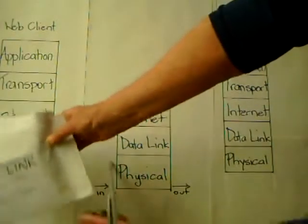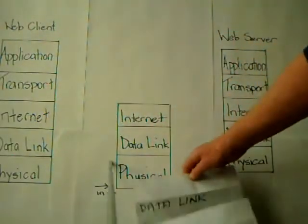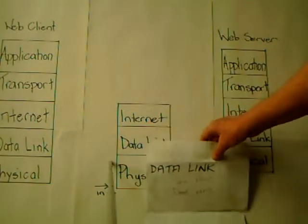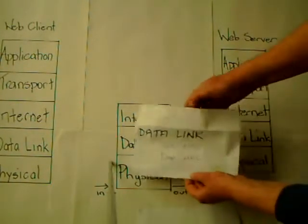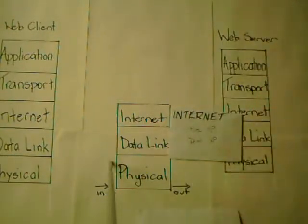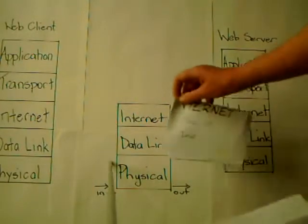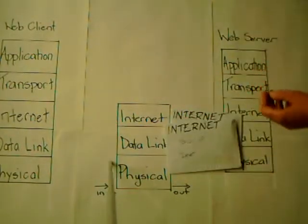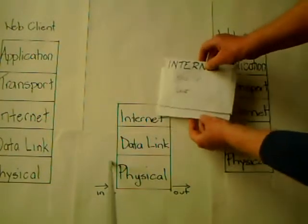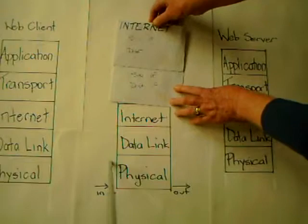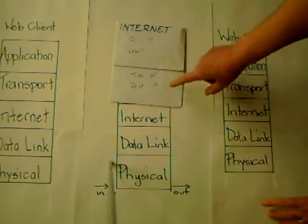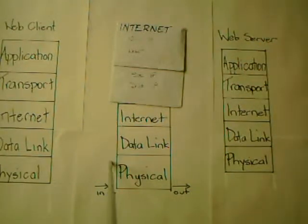Once they've been sent off across the wire, they arrive at the router. The router is the intermediate device. It takes those bits, sends them up to the data link layer, and de-encapsulates — taking the envelope away. The frames are sent up towards the internet layer where they are once again packets, and the internet layer checks the IP addresses so it knows where to send them.